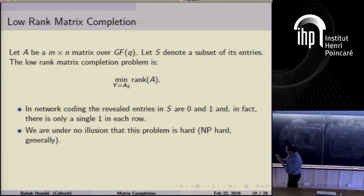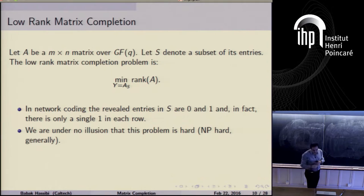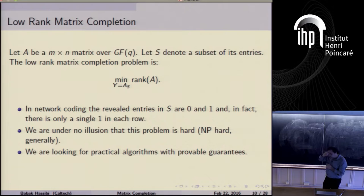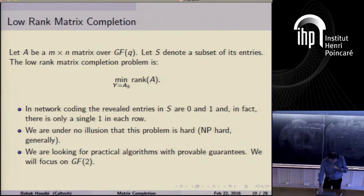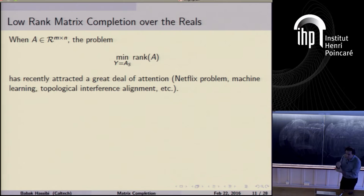I'm under no illusion that this problem is easy — it's NP-hard in full generality, as shown by Spielman. We're not claiming to solve it in general, but we are looking for practical algorithms with provable guarantees: under certain conditions I want to be able to say that the algorithms we propose work. My focus today will be on GF(2), so the matrices will be binary.